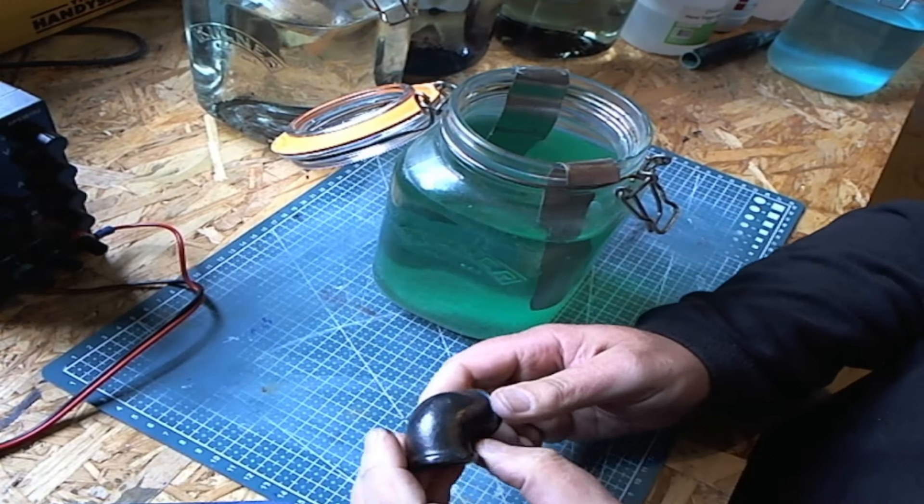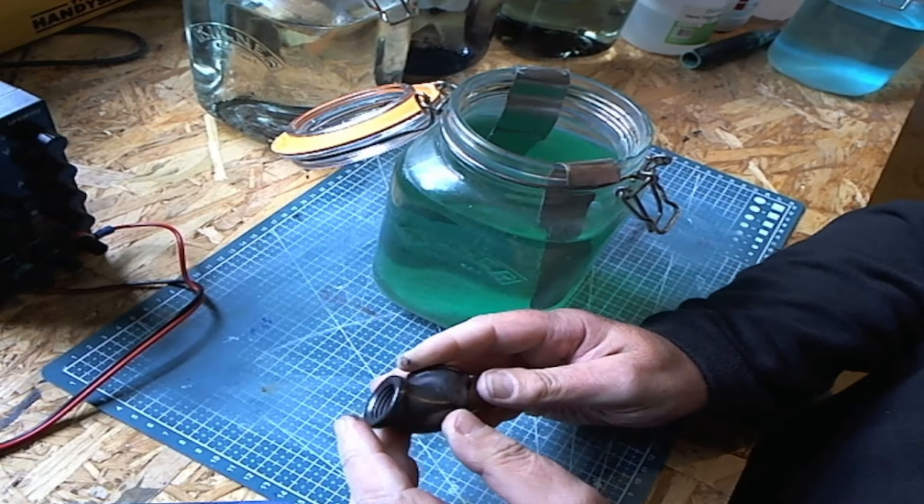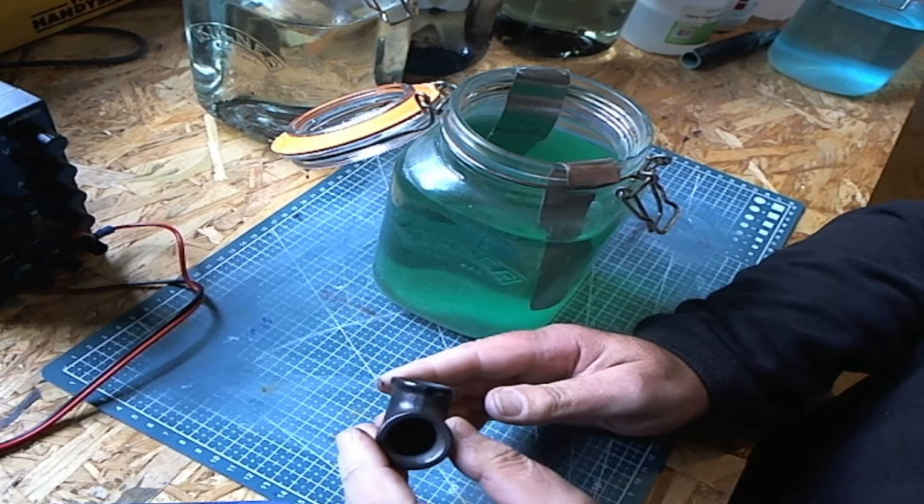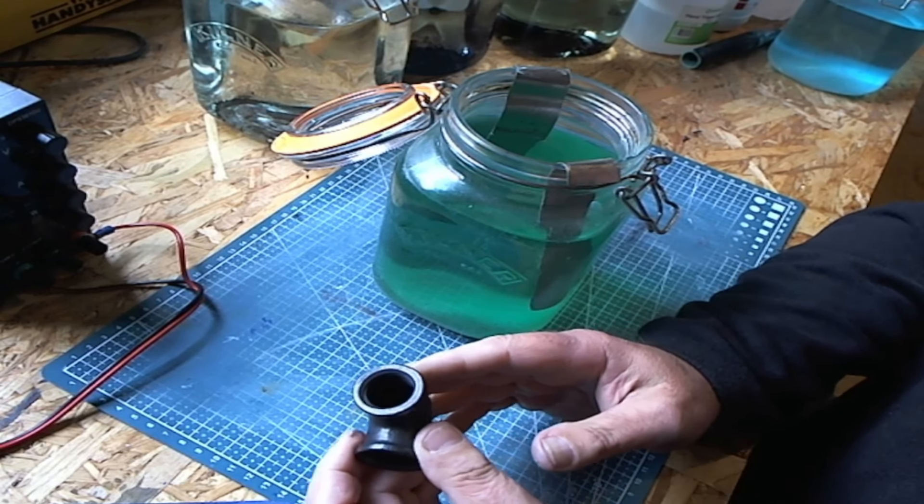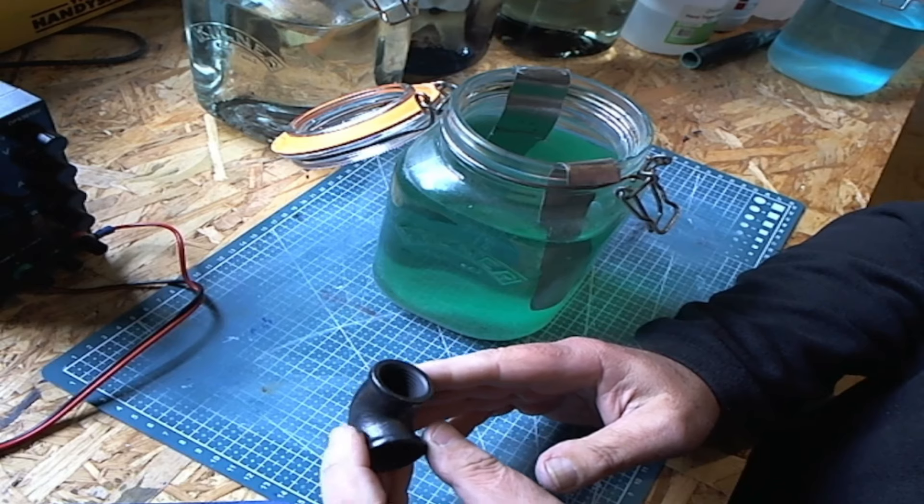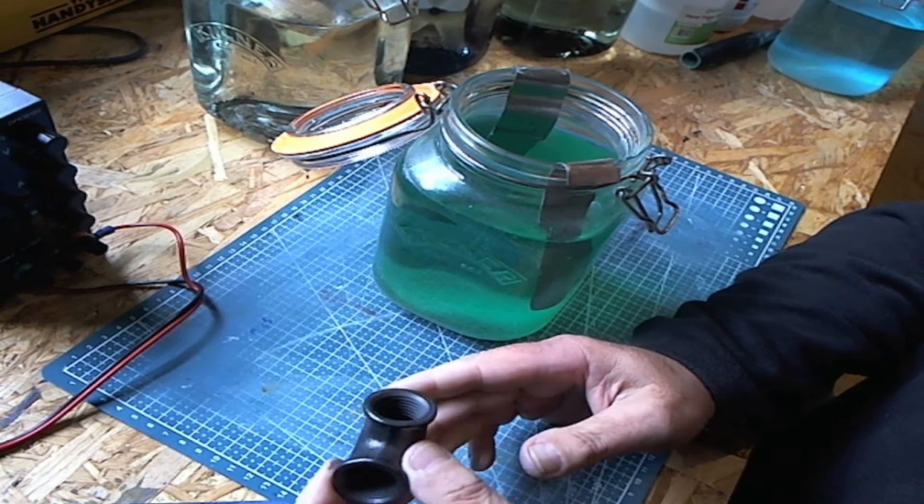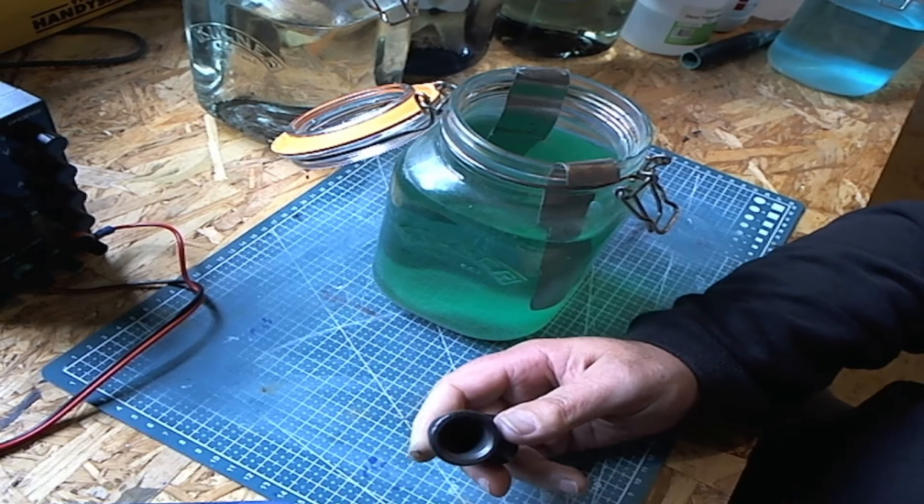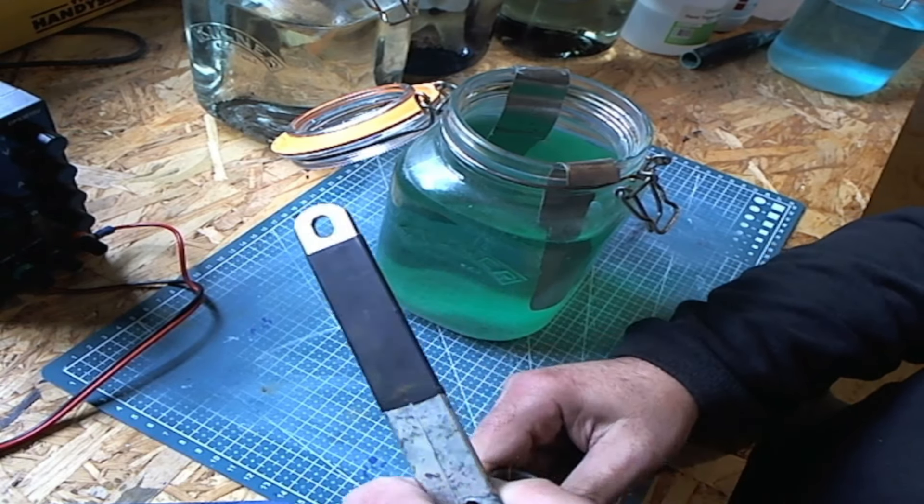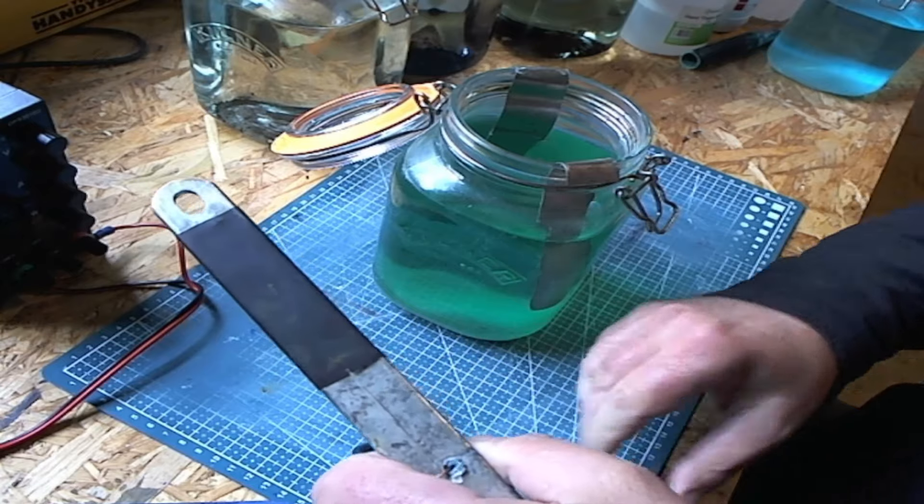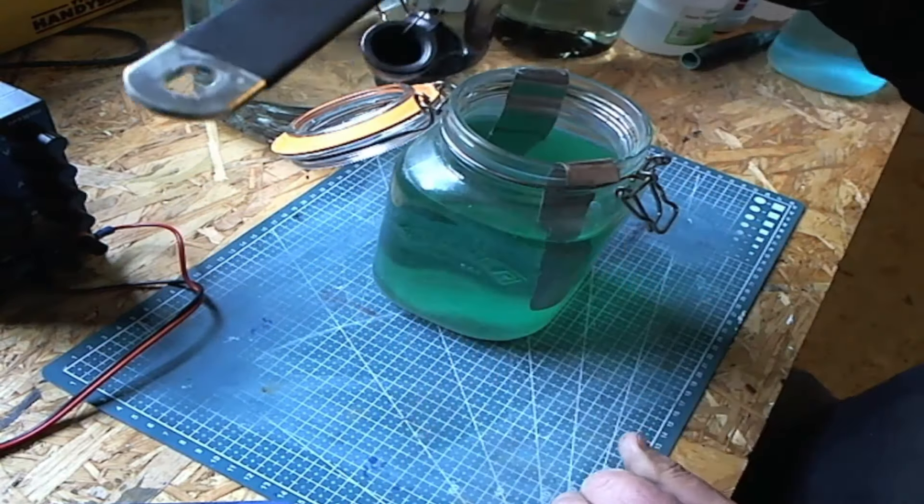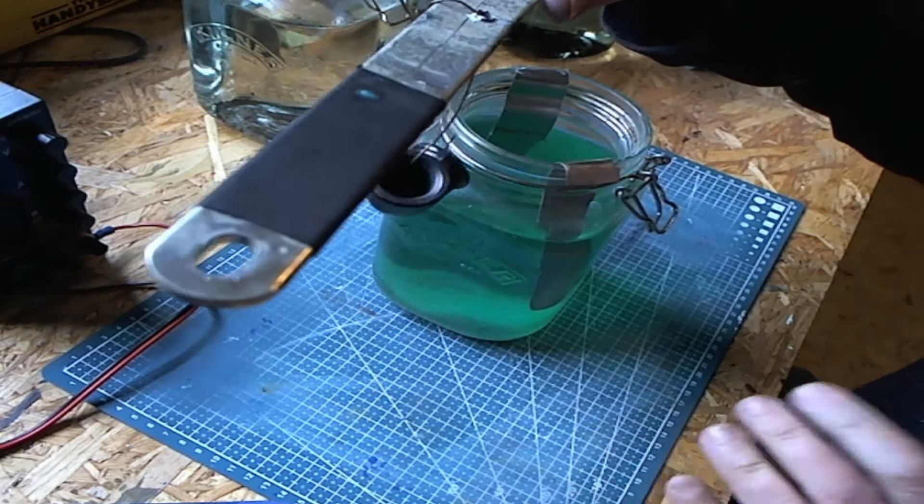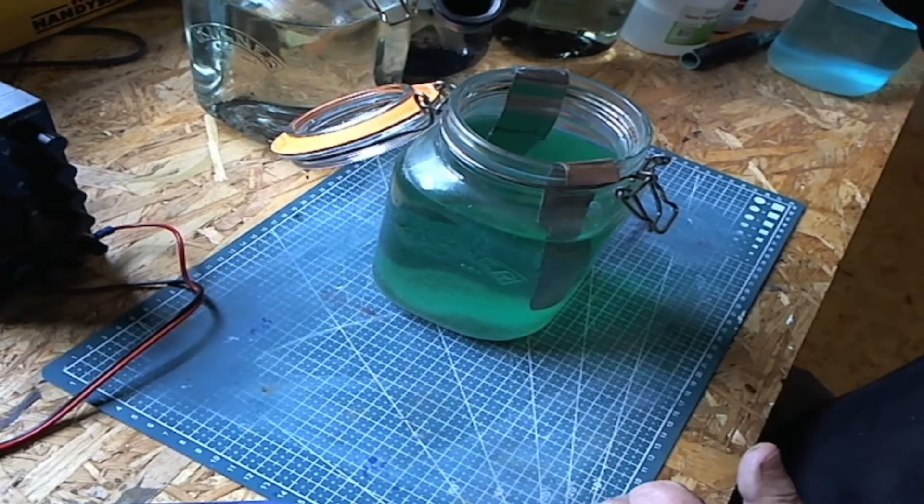So I've now sprayed this. I gave it about three coats of conductive spray which I showed you earlier and it dries very quick. But before we put this in the nickel plating, I just want to drop it into some hydrochloric acid to give it a clean.